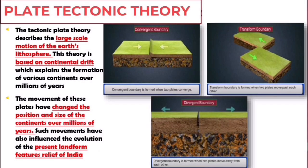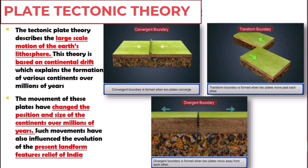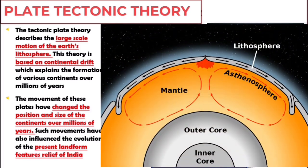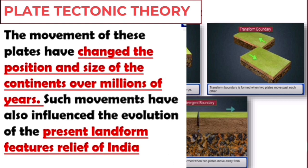These three processes are associated with the theory of plate tectonics. The plate tectonic theory describes the large-scale motion of the earth's lithosphere. This theory is based on the continental drift theory. The plate tectonic theory refers to the movement of the lithospheric plates just below the earth's crust. These plates have been continuously moving over the years and are still moving today, leading to either the formation or deformation of any kind of relief on the earth's crust. The movement of these plates has changed the position and size of continents over millions of years and has influenced the evolution of the present landform features and reliefs of India.